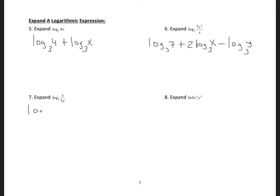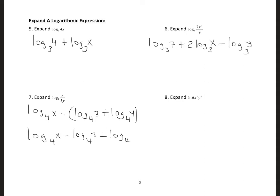For the next expansion, logarithm to base 4 of x — we are dividing — so minus, and I'll put this in parentheses, logarithm to base 4 of 3 plus logarithm to base 4 of y. Then removing the parentheses gives: logarithm to base 4 of x, minus logarithm to base 4 of 3, minus logarithm to base 4 of y.